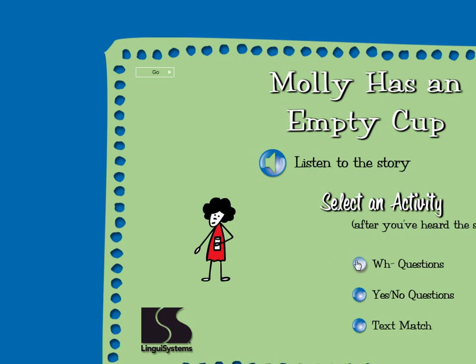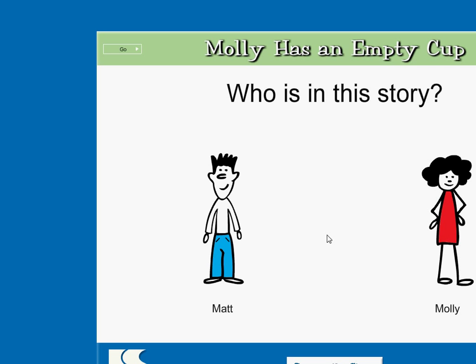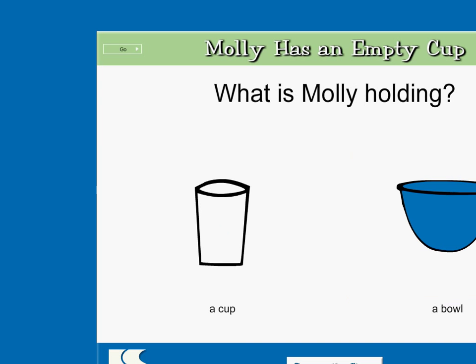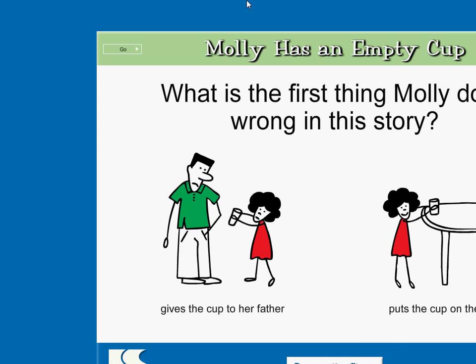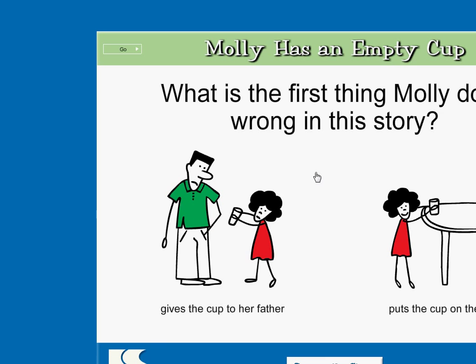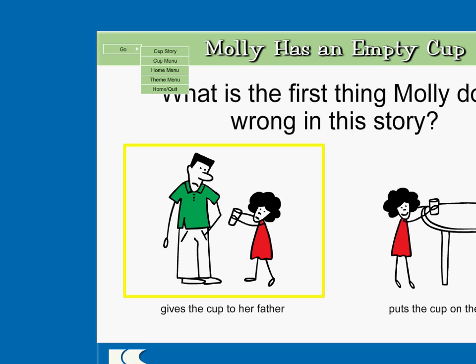Molly has an empty cup. Who is in this story? Matt. Molly. Right on. What is Molly holding? A cup. A bowl. Great job! What is the first thing Molly does wrong in this story? Gives the cup to her father. Puts the cup on the table. Super!